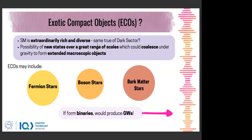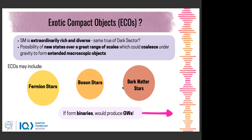If such new dark sector states existed, they could coalesce under gravity and form extended macroscopic compact objects — so-called exotic compact objects (ECOs) such as fermion stars, boson stars, and dark matter stars. These include objects like axion stars. If such objects form binaries, they would definitely produce gravitational waves from their inspirals and potential mergers, making them an additional possible source of gravitational waves.